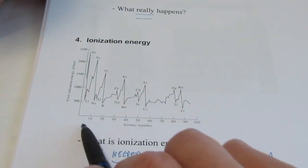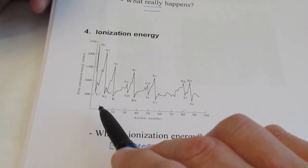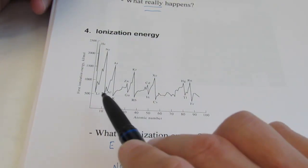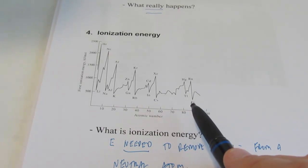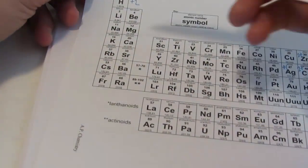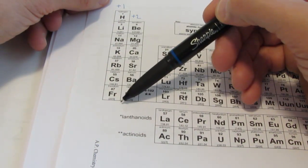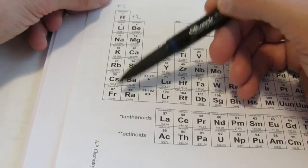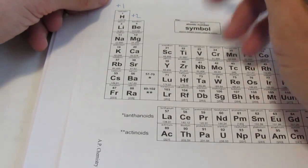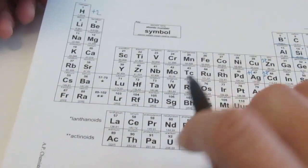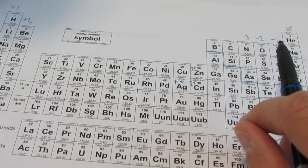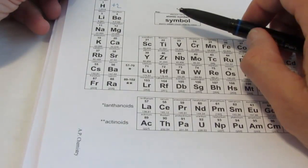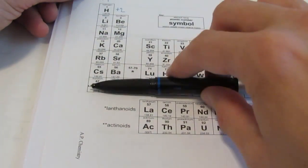The y-axis is ionization energy, the x-axis is atomic number. You'll notice when I go down the alkali metal family — lithium, sodium, potassium, rubidium, cesium, francium — their ionization energy generally gets lower. Why? When I go down a family, the atomic radius is getting bigger, so those electrons are farther and farther away from the nucleus, there's more shielding, and they're easier to pluck away. So the trend is: when you go across a period, ionization energy increases because the atomic radius gets smaller; when you go down a family, the ionization energy decreases because you are gaining energy levels and there's more shielding.